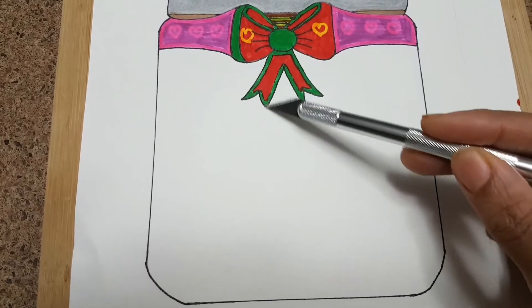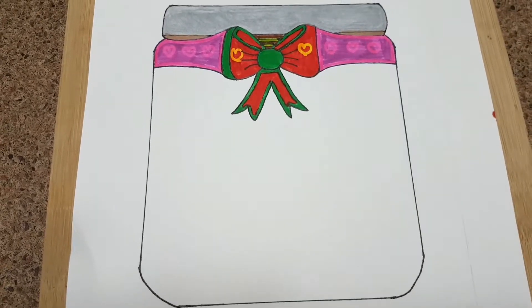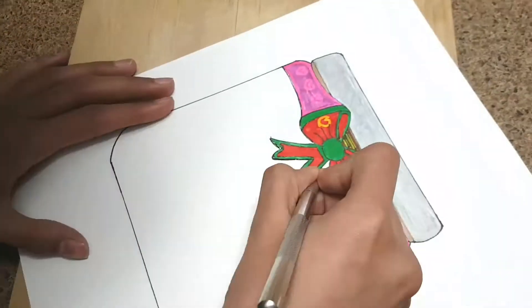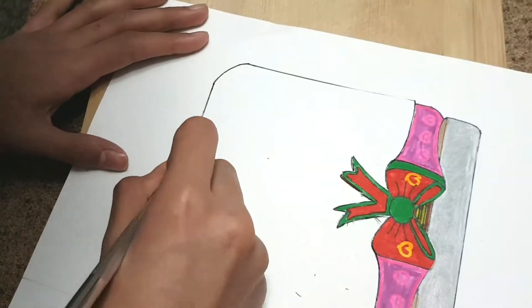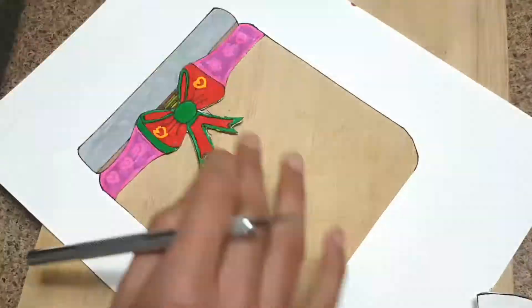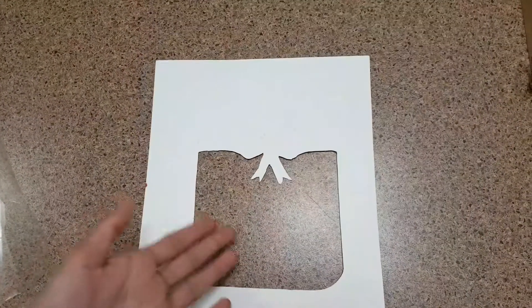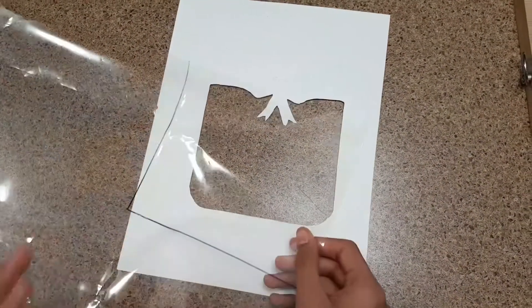Now you're just going to take an X-acto knife and cut out the middle part of the jar. That's what I'm doing right now. That's why I said you don't have to color that in. There I've cut it out and this is how it looks.